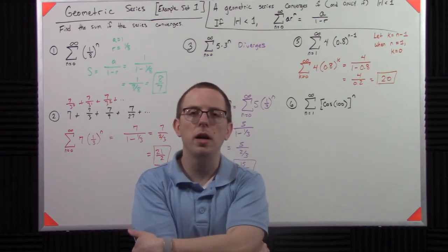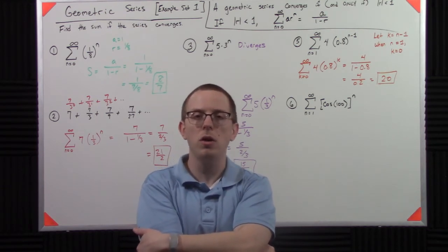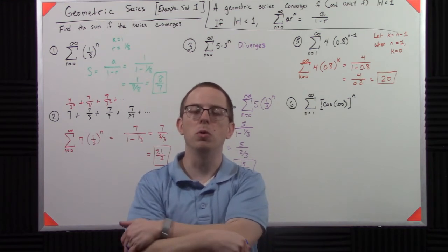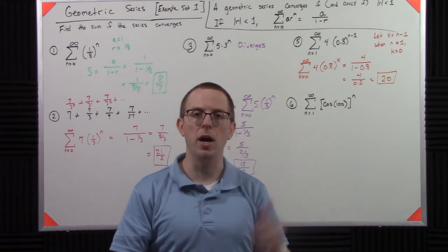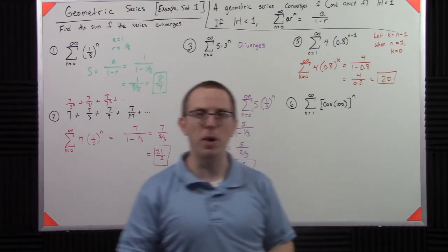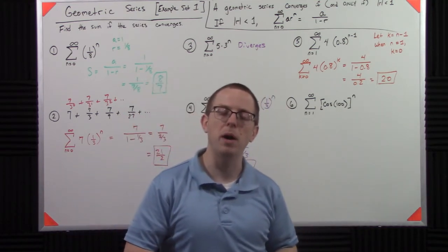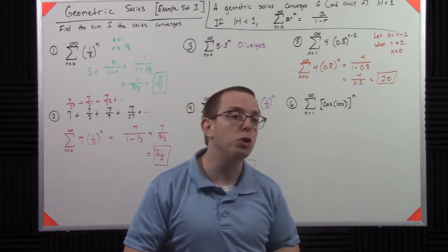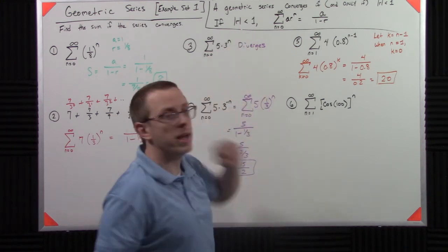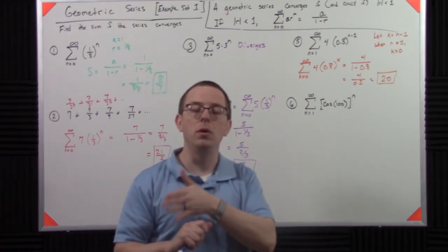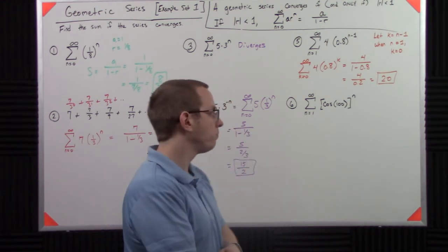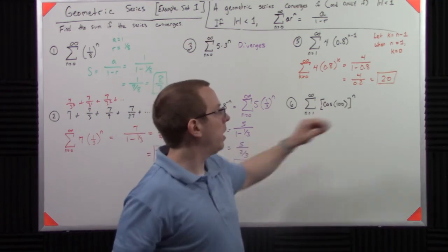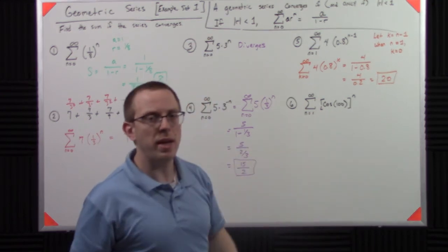Well, it turns out that cosine only ever hits negative 1 or positive 1 if it's some multiple of pi, right? So it would have to be like pi or 2 pi or 3 pi or 4 pi. Well, 100 is not a multiple of pi. It doesn't divide evenly by pi. So you know for sure that its magnitude has to be less than 1. It might be negative, but it doesn't matter. If I took the absolute value, it would still be less than 1. So I'm good there.